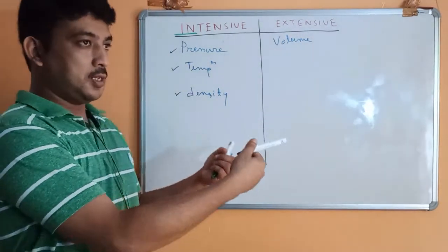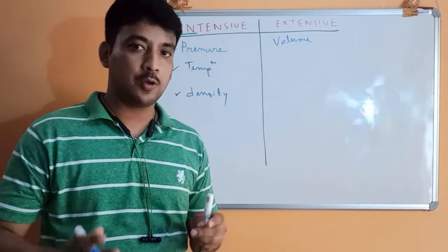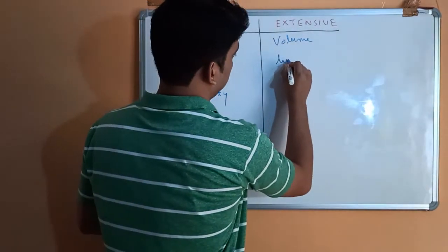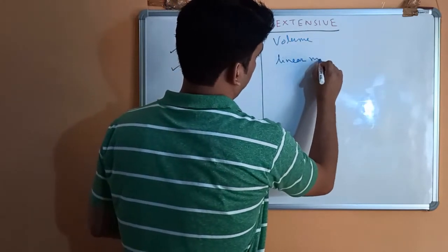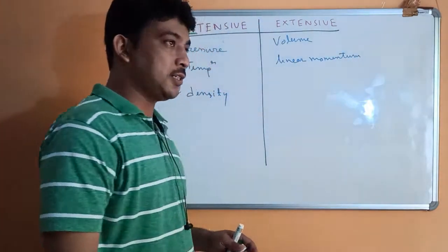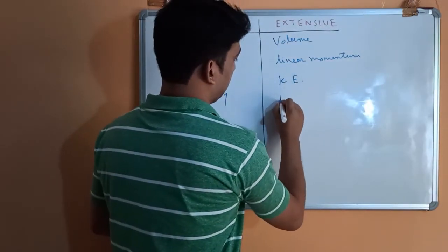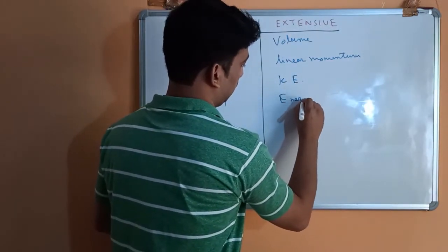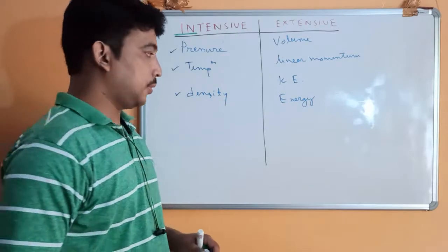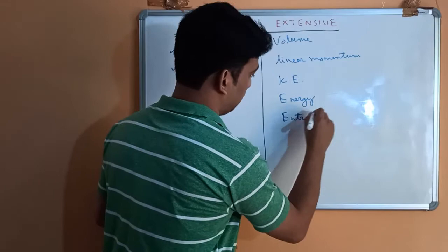What are the other extensive properties — those which depend upon mass? Linear momentum (mass times velocity) directly depends on mass, so it is extensive. Similarly, kinetic energy (half m v squared) directly depends on mass. Energy as a whole depends on mass, so energy is extensive. Entropy will also depend upon mass, so entropy is also an extensive property.